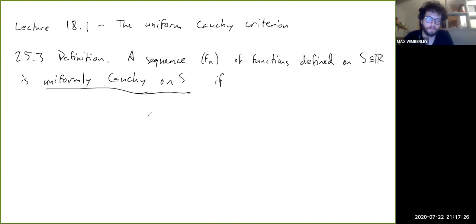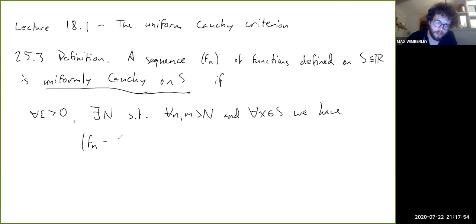So for all ε > 0, there exists a capital N—remember, the fact that I'm quantifying capital N right now means that it can only depend on epsilon—such that for all n and m greater than N and for all x in S, we have |fn(x) - fm(x)| < ε.